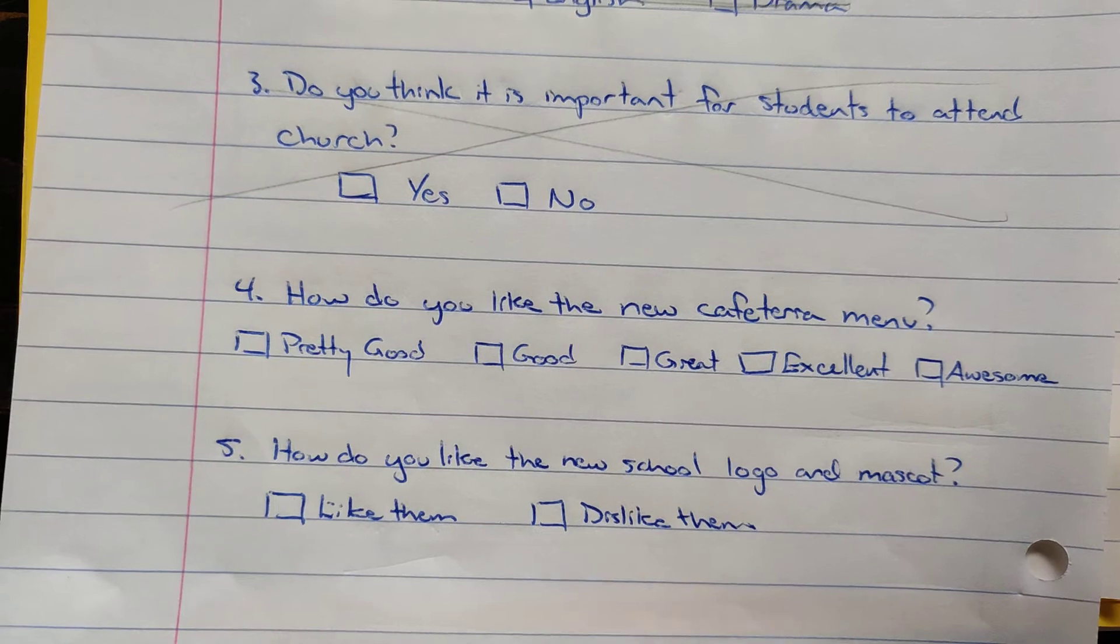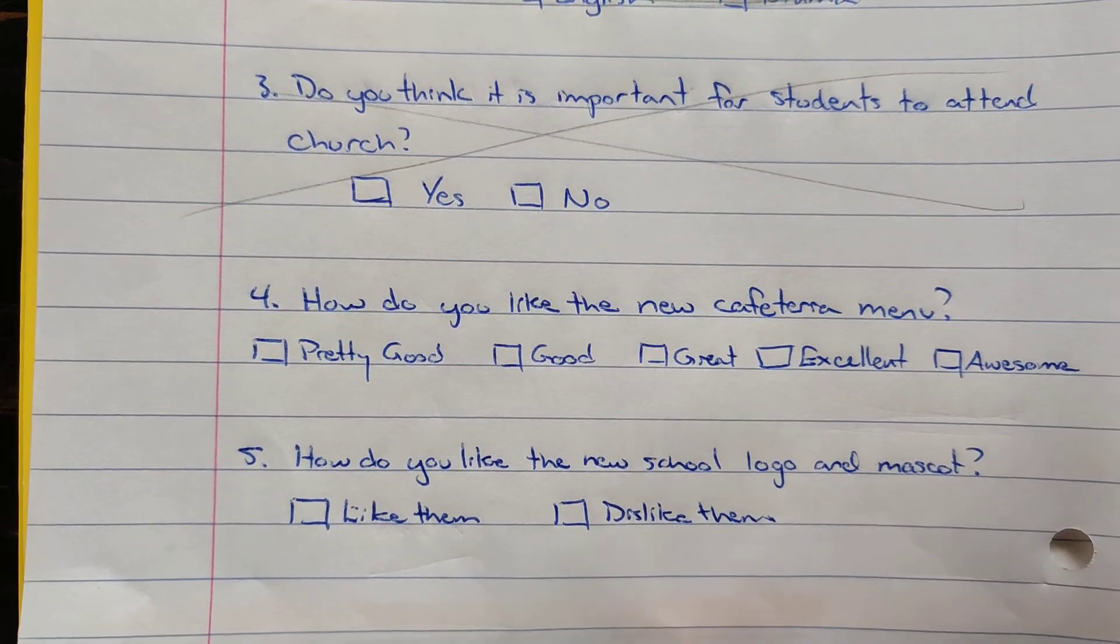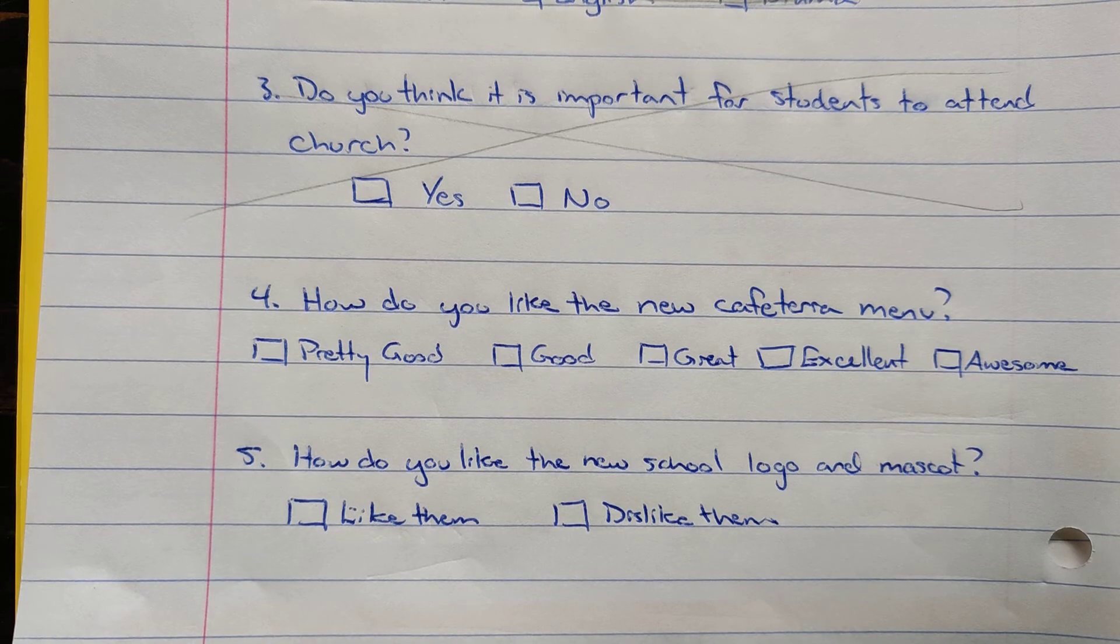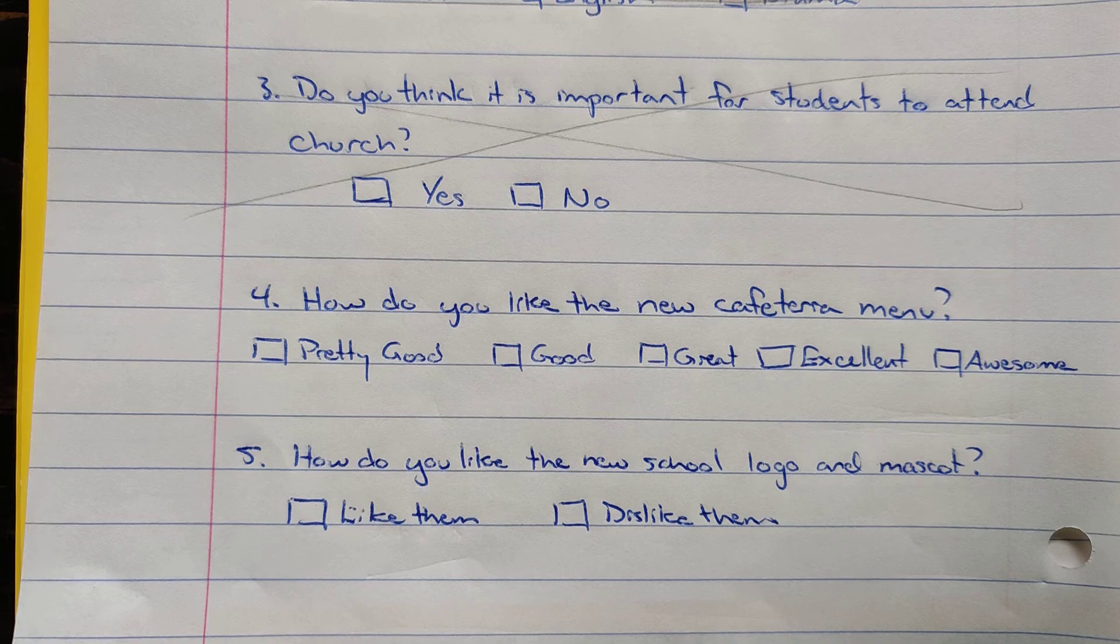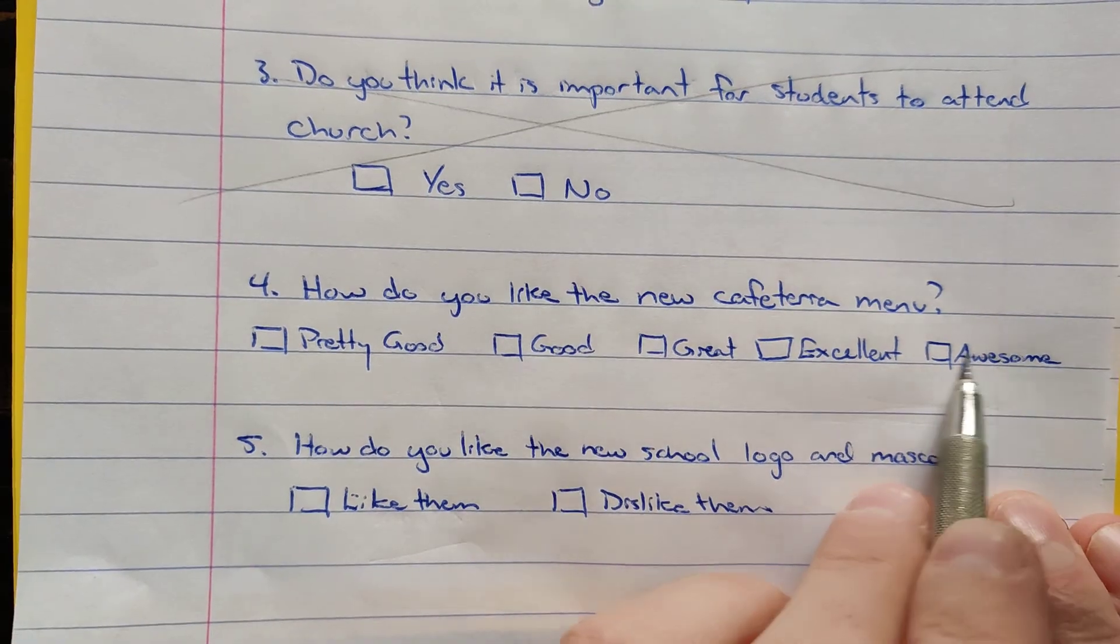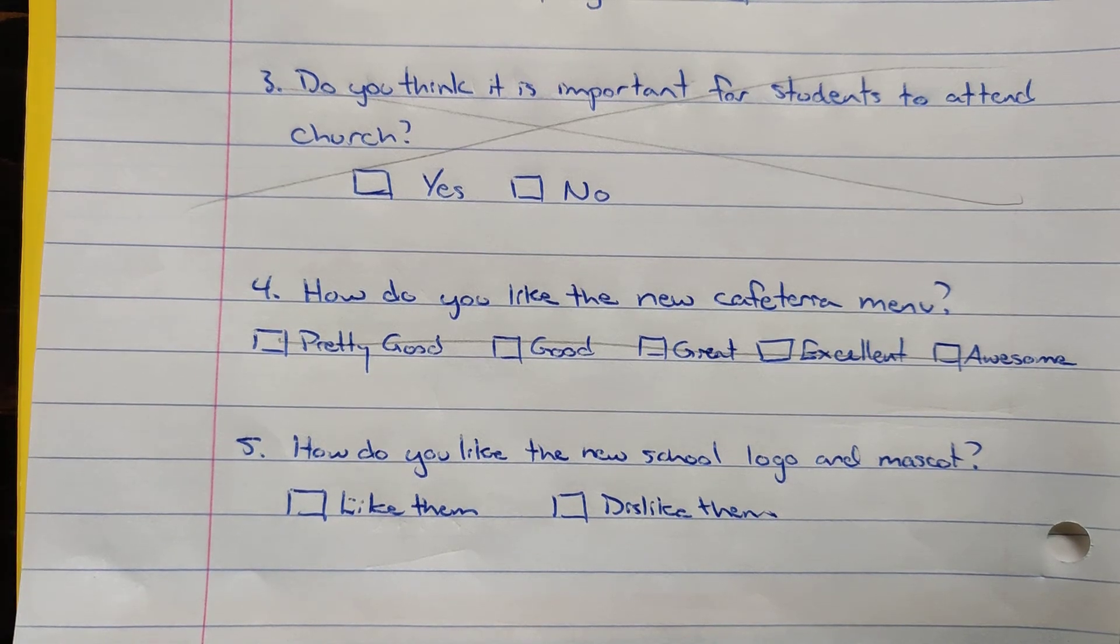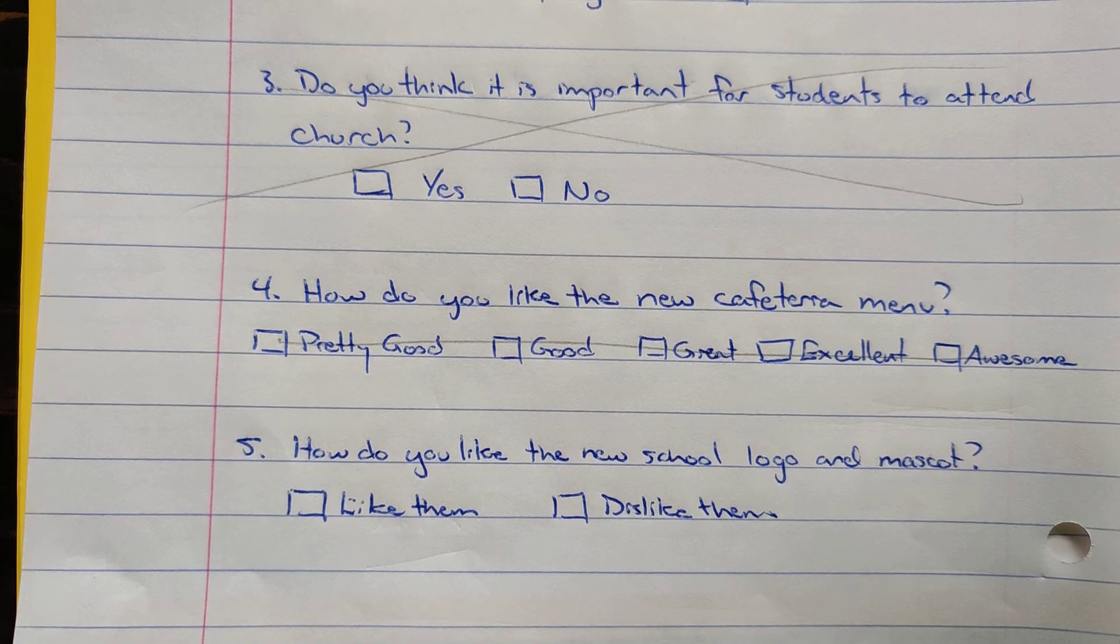How do you like the new cafeteria menu? Is it pretty good, good, great, excellent, awesome. What if you don't like it? You could choose pretty good, but pretty good says that it's not bad. So you aren't giving the students an option there as well. So this might be a bad question. You could change this perhaps to a scale of like to dislike or something like that. That might be a better option or just let them put a comment in there. That would really give them an option to say.